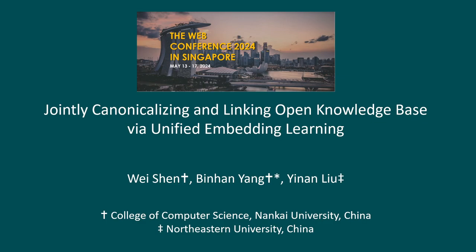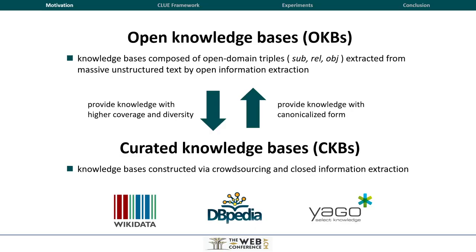In general, knowledge bases can be classified into two types: open knowledge bases and created knowledge bases. OKBs are composed of triples from open information extraction techniques, while CKBs are usually constructed via cross-sourcing and closed information extraction.